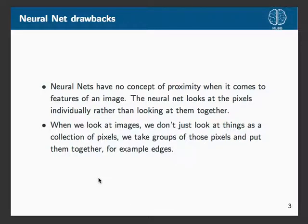Let's go over traditional neural nets. Say we're doing something like classifying MNIST. What we do is take our images, flatten them into however many features — it's 784 features from 28x28 images — and then run them through some layers: hidden layers, fully connected output, softmax, whatever.